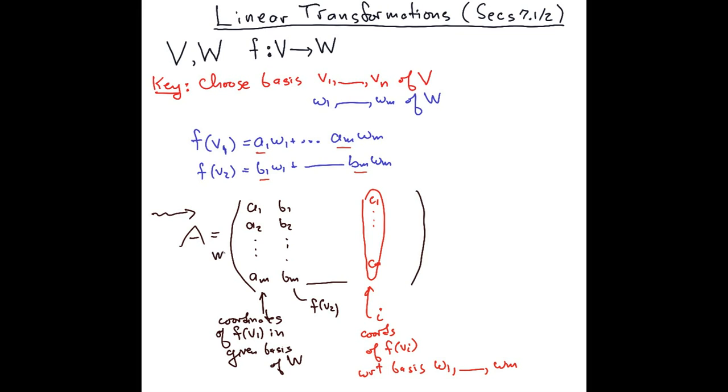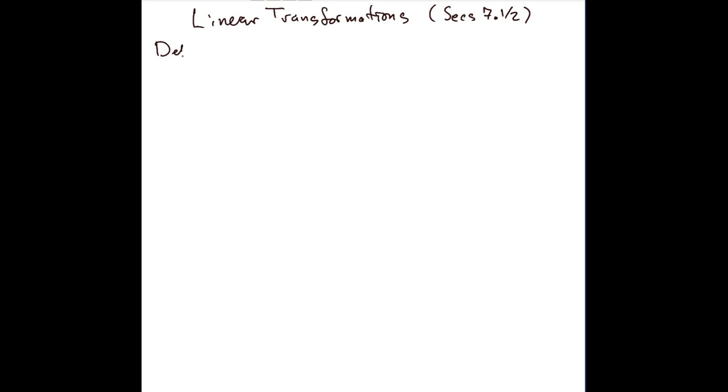So again, this is an m by n matrix. Let me state this formally. Suppose we have two vector spaces V and W, and we have a basis v_1 through v_n of V and w_1 through w_m of W. Then the matrix of a linear transformation f mapping V to W...